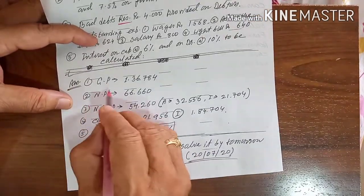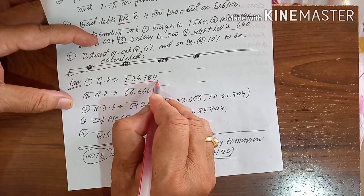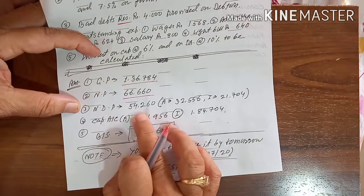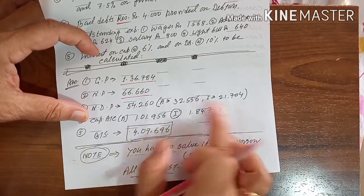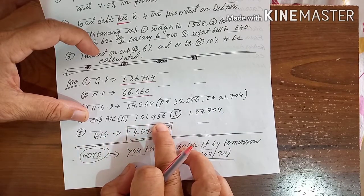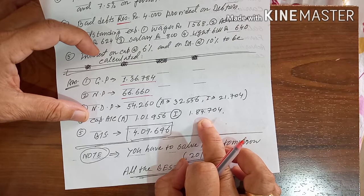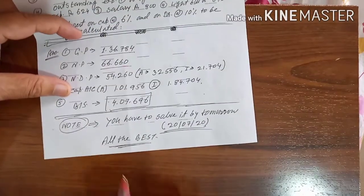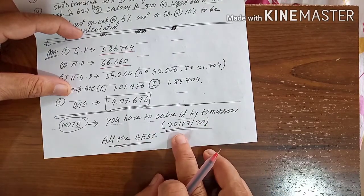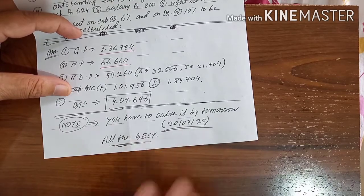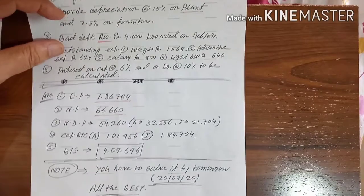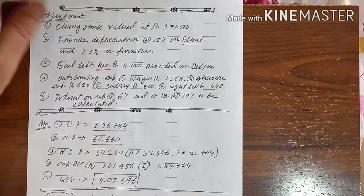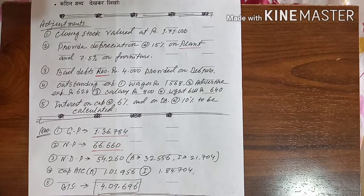The answers are: gross profit Rs 1,36,784; net profit Rs 66,660; net distributable profit Rs 54,260 — which will be distributed between the two partners. Capital account balance: for Ankita Rs 1,19,56 and for Isha Rs 1,84,704. Balance sheet total Rs 4,76,96. You have to solve it latest by tomorrow and send the answer through WhatsApp. All the best. In the next video I will start chapter 3. This is a compulsory test for all of you — everyone will try to solve it. If it is not possible I will do it later. Okay, all the best, bye.